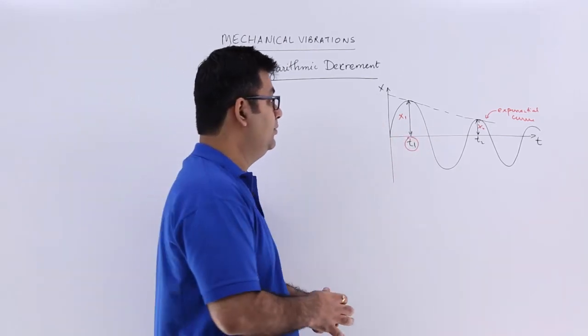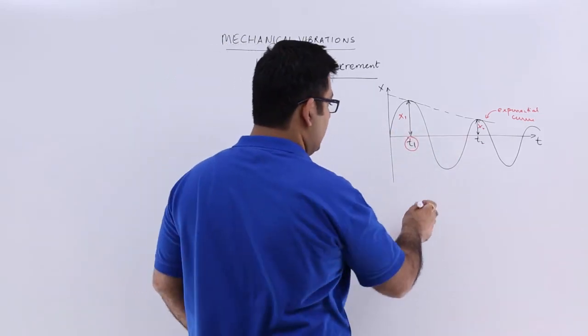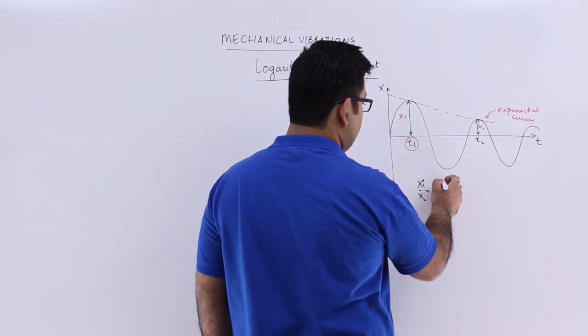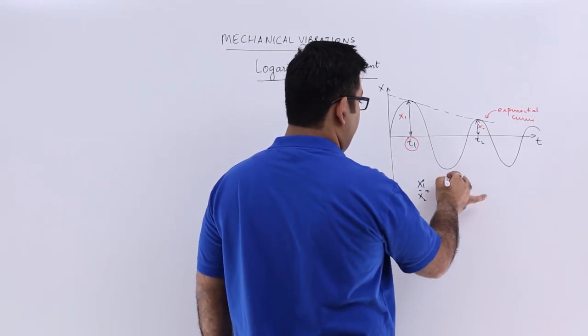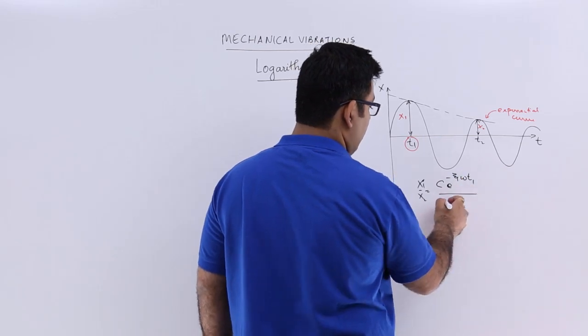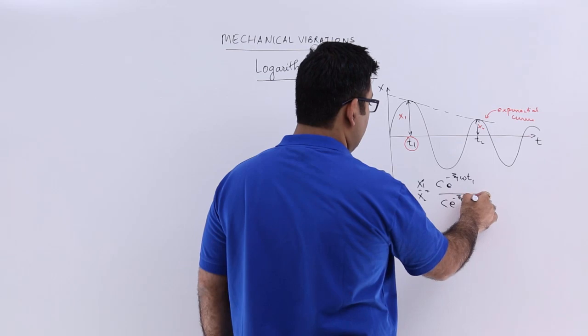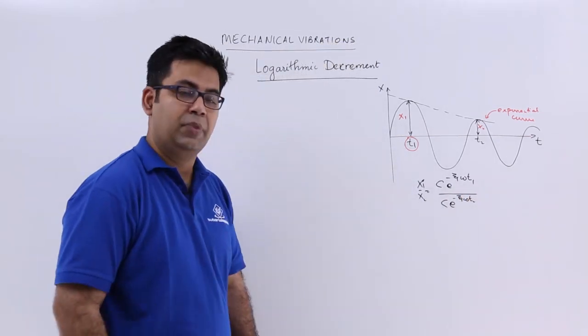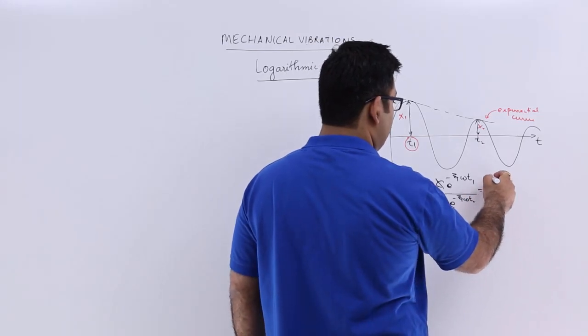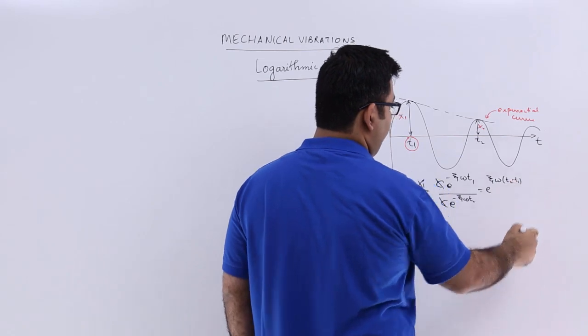If we take the ratio between x₁ and x₂, we have x₁/x₂ equals c·e^(-ζωt₁) divided by c·e^(-ζωt₂). We can cancel c and get e^(ζω(t₂-t₁)).